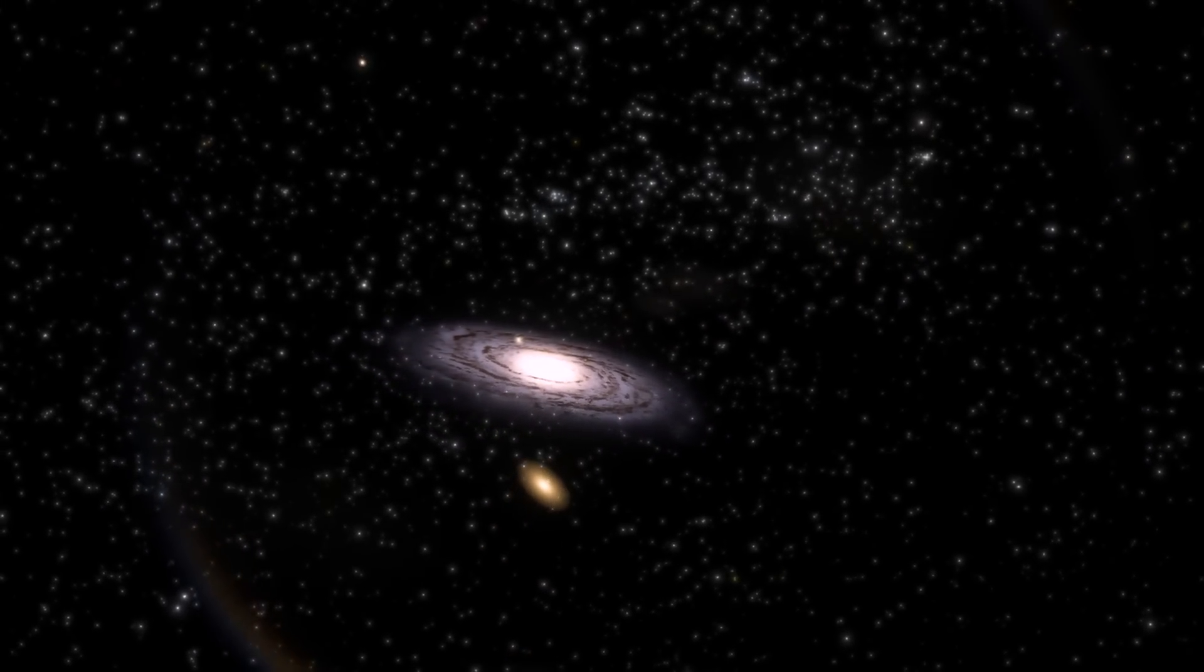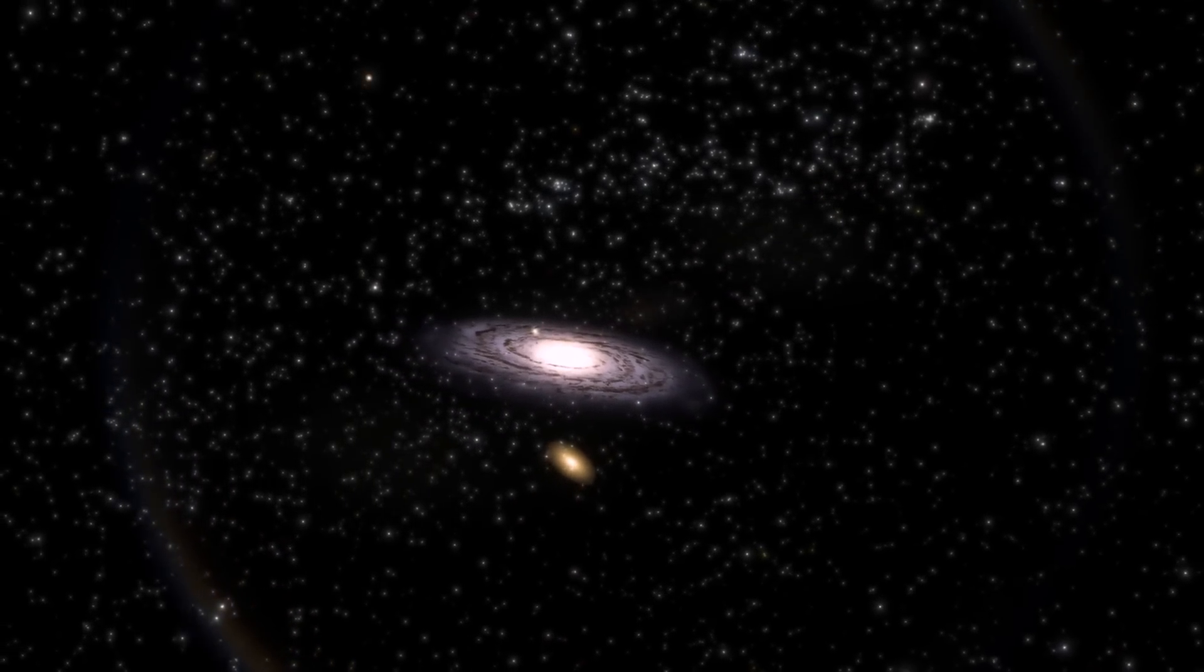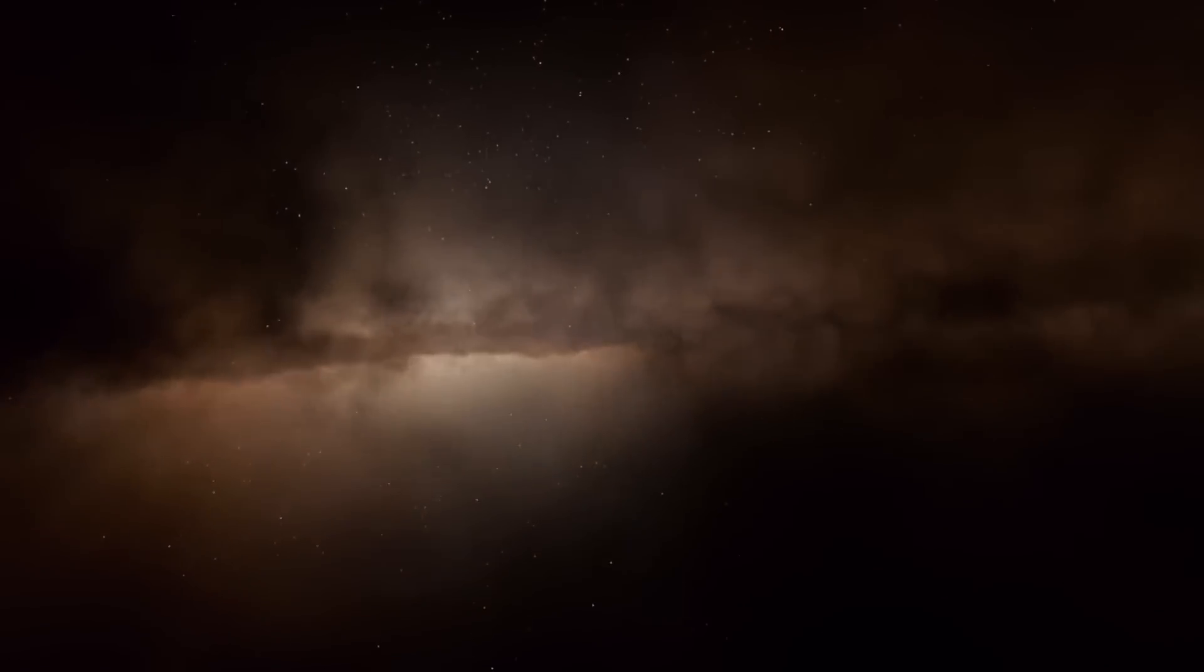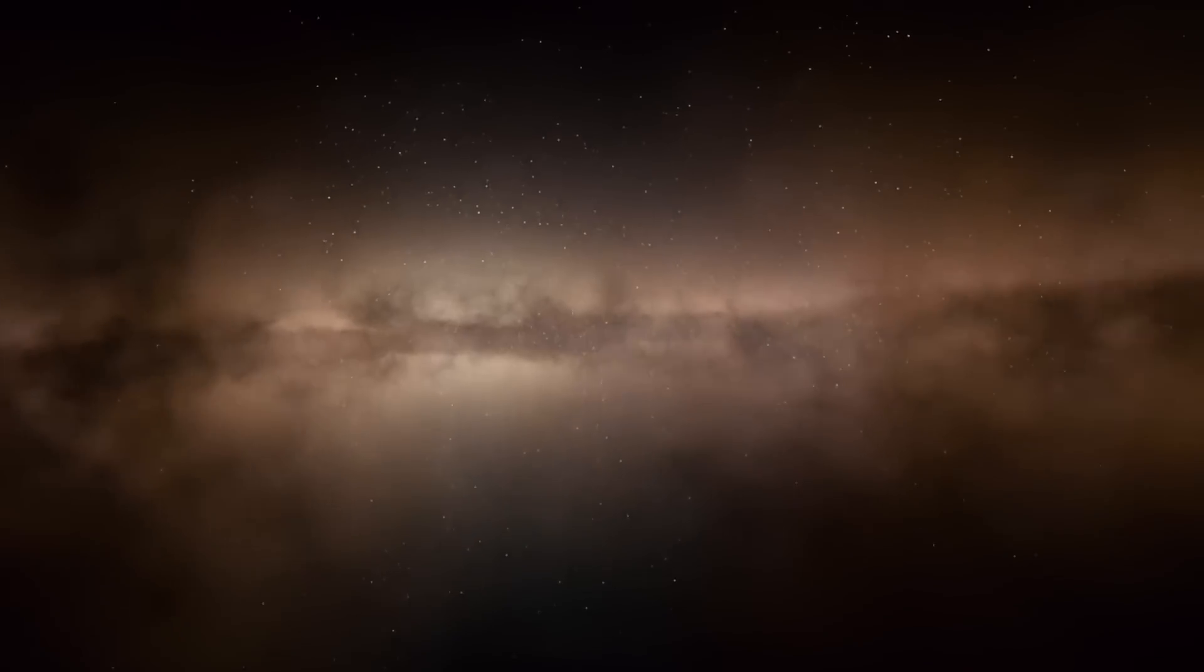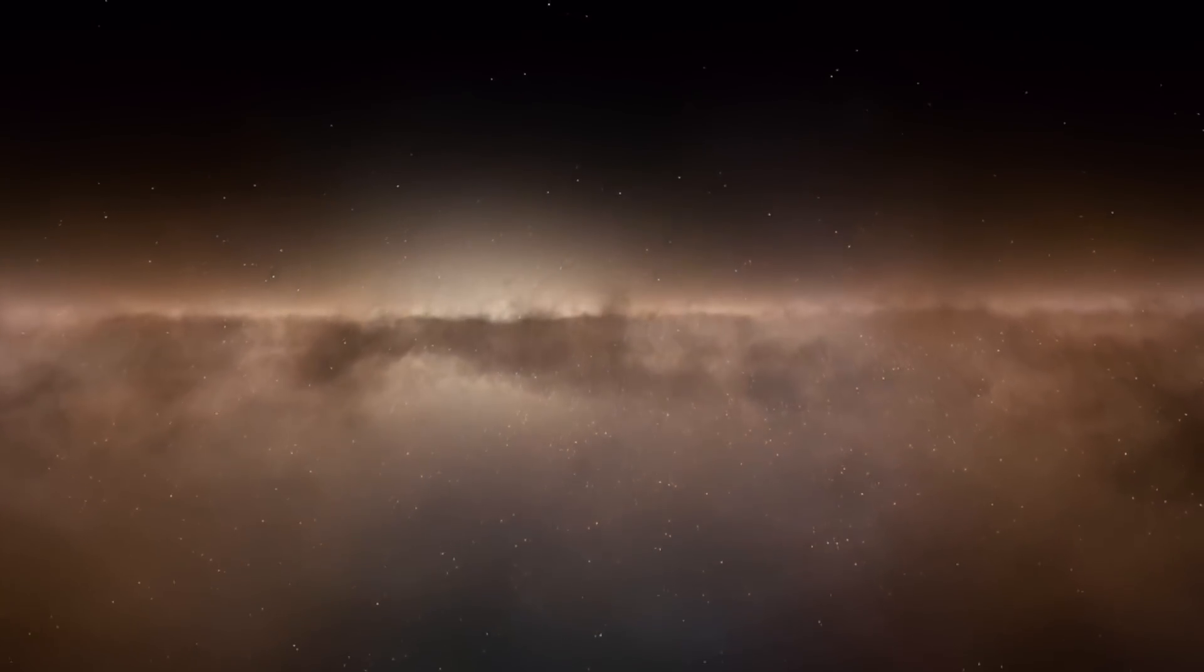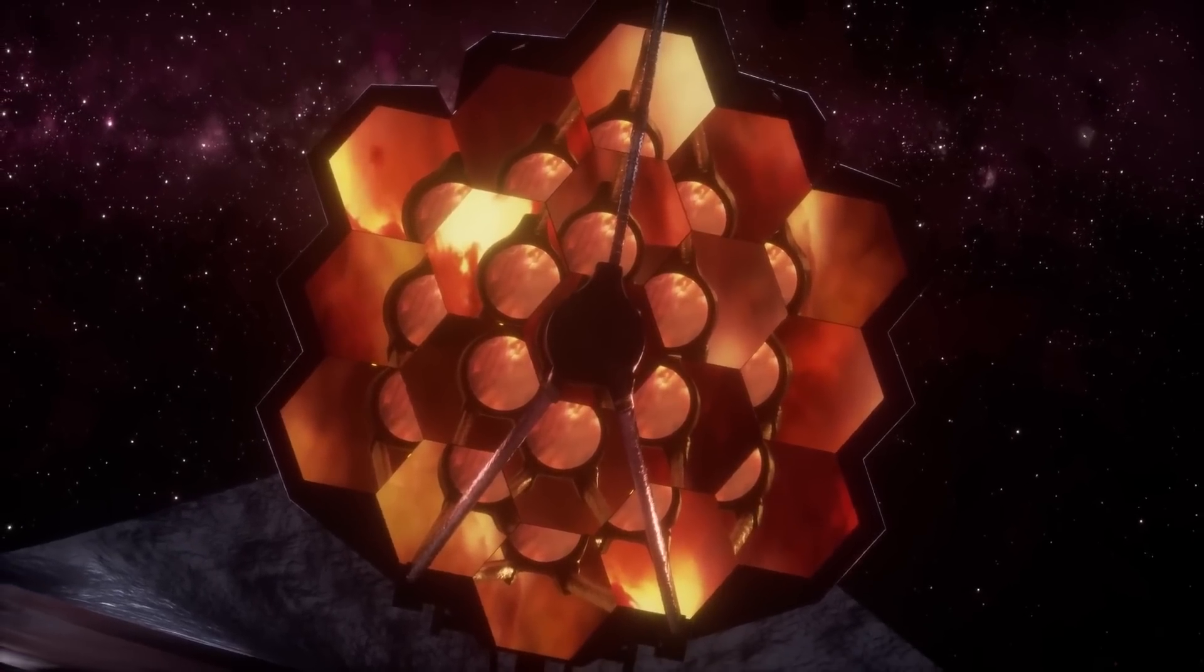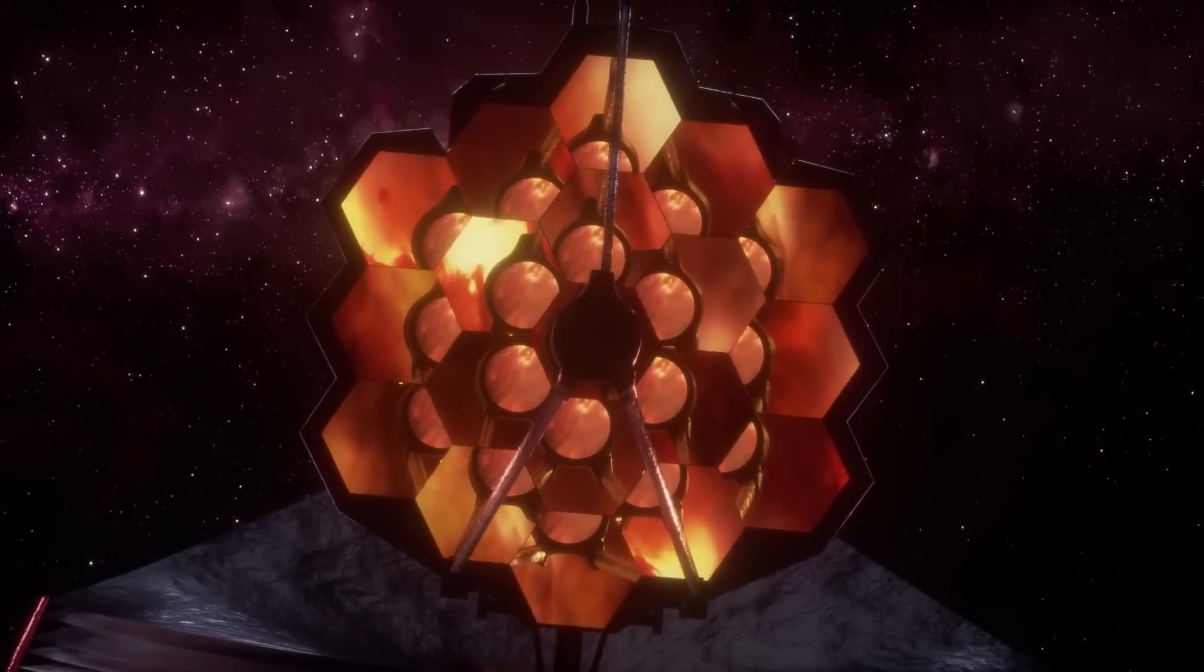The Andromeda galaxy, our closest cosmic neighbor, is a mysterious distant wonder that can only be seen with the naked eye on a clear night from a very dark location. To the unaided eye, it appears as a fuzzy patch of stars about half the width and length of the moon. But with a powerful telescope, you can see that it's actually six times larger than that.